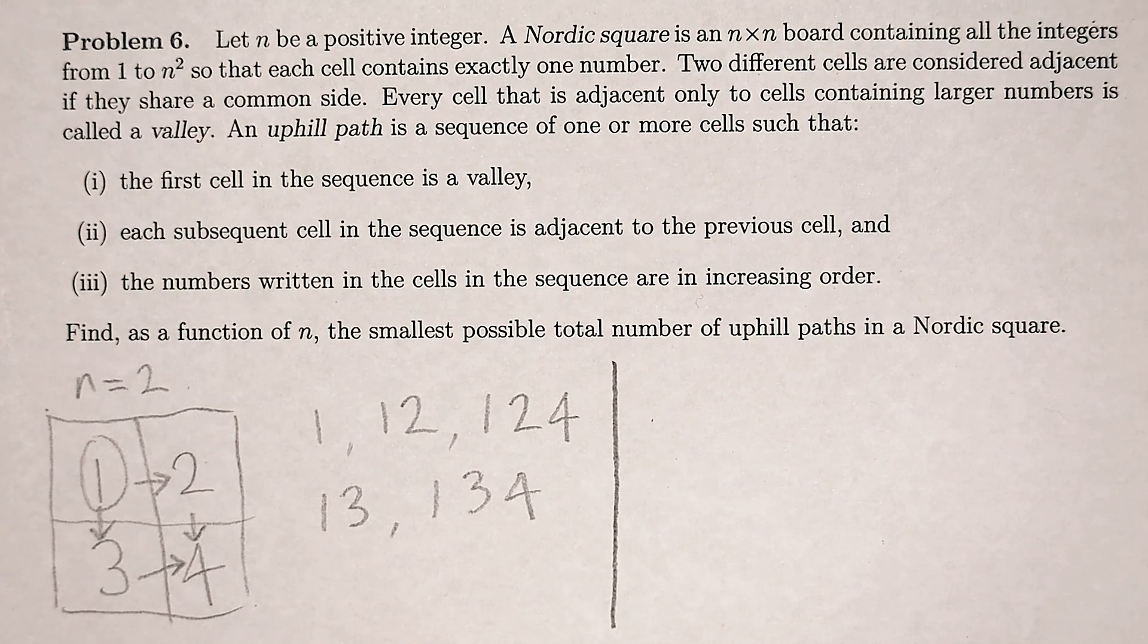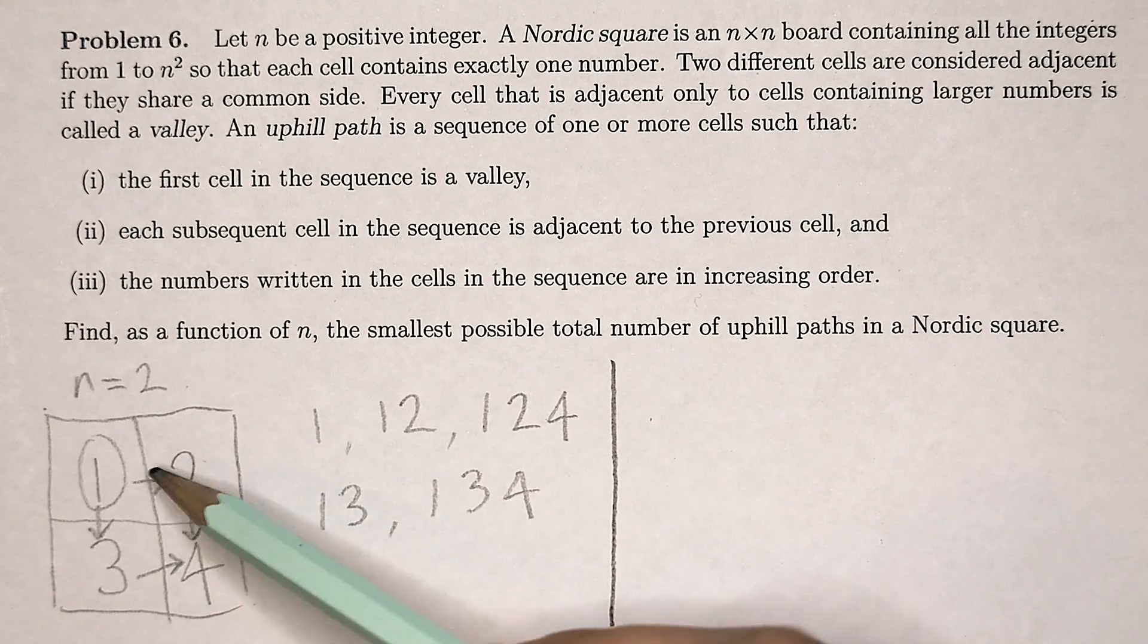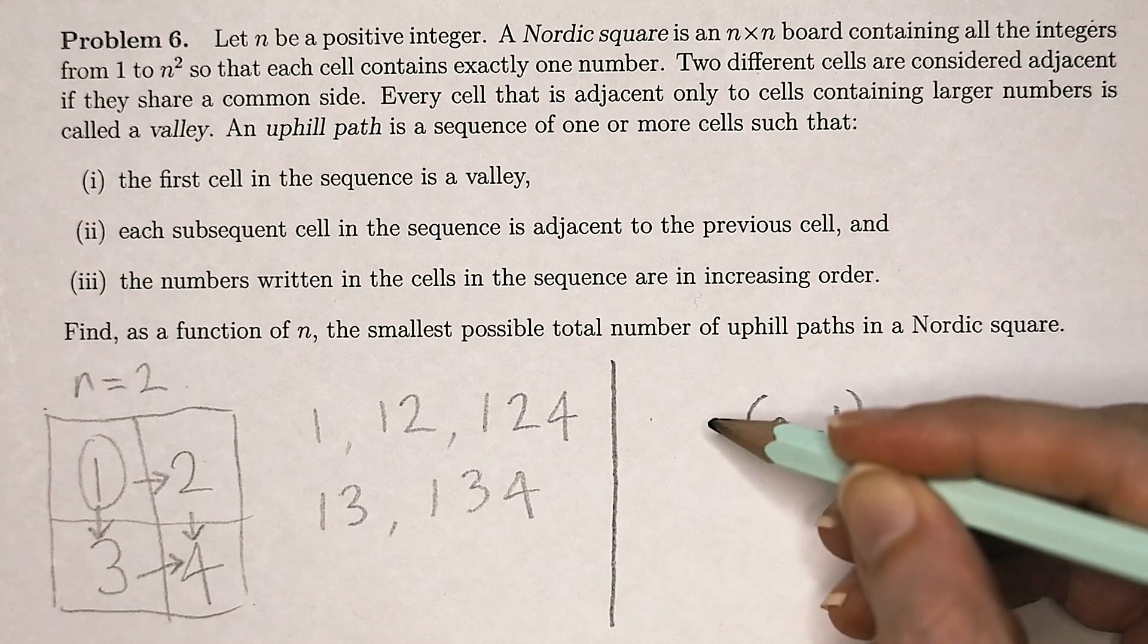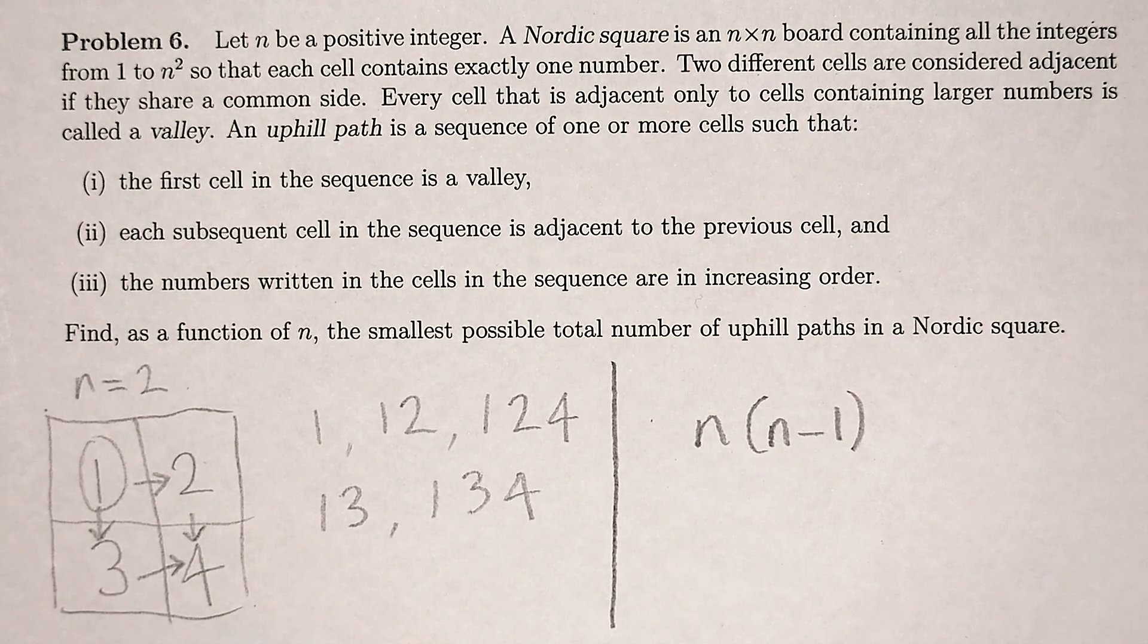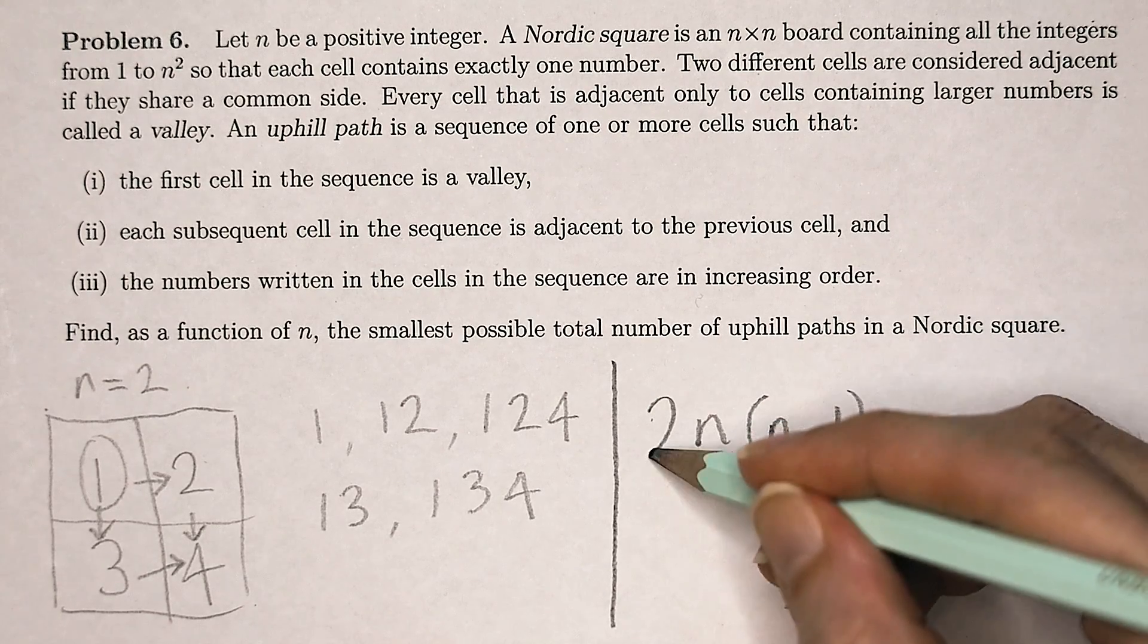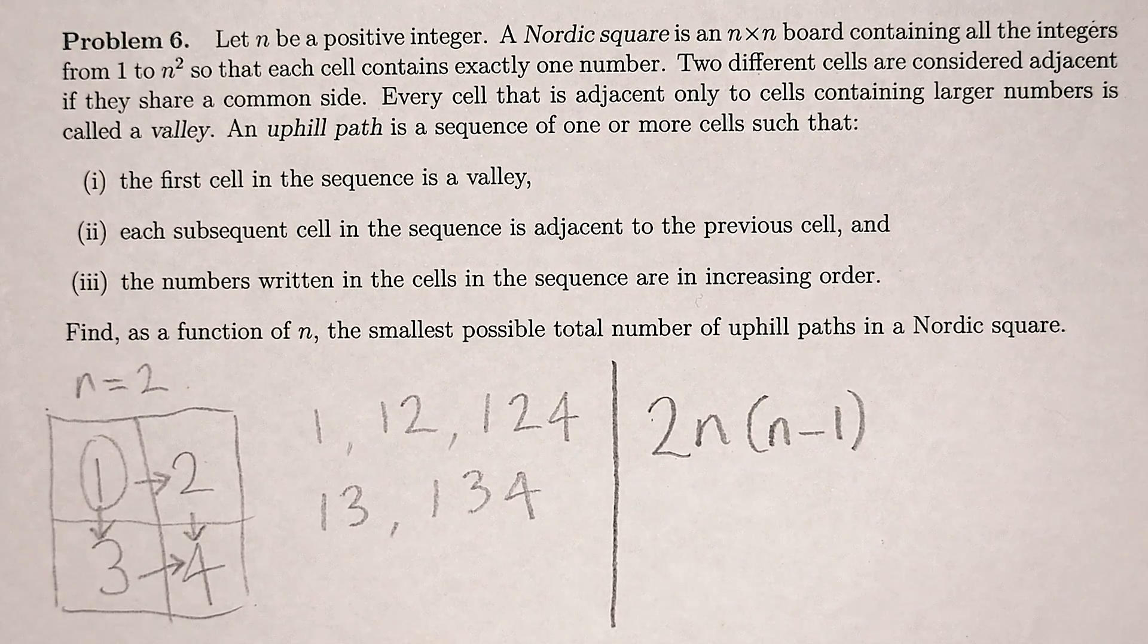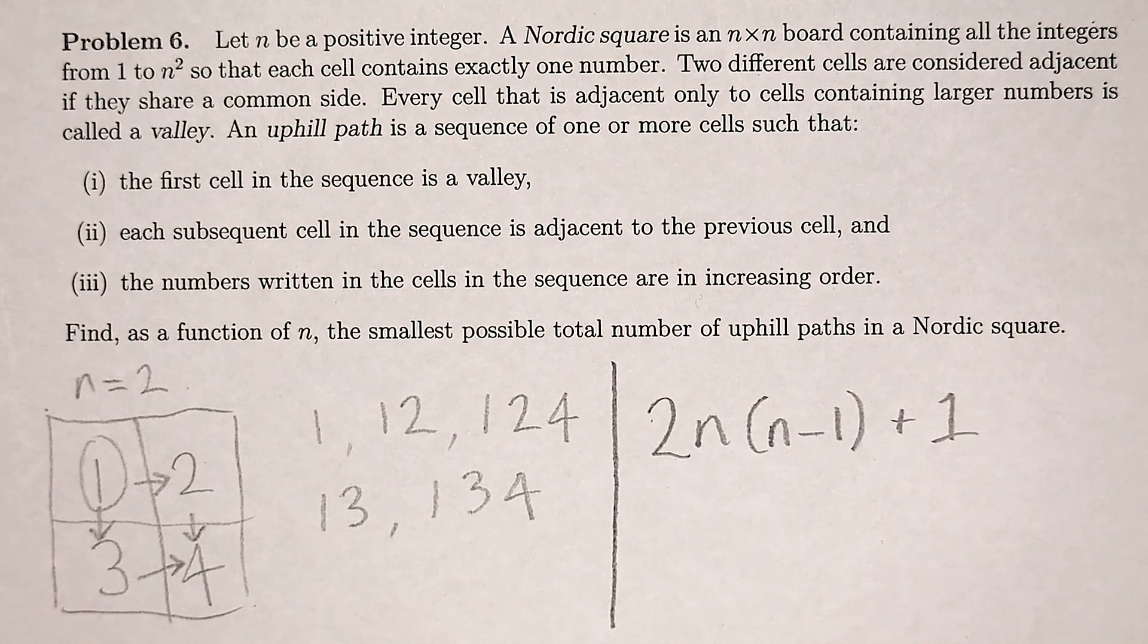To extend that for any number of n, we will always have n minus 1 adjacent numbers on each row times n rows, and n minus 1 adjacent numbers on each column times the number of columns. So that's two n times n minus 1 paths plus one to account for our valley.